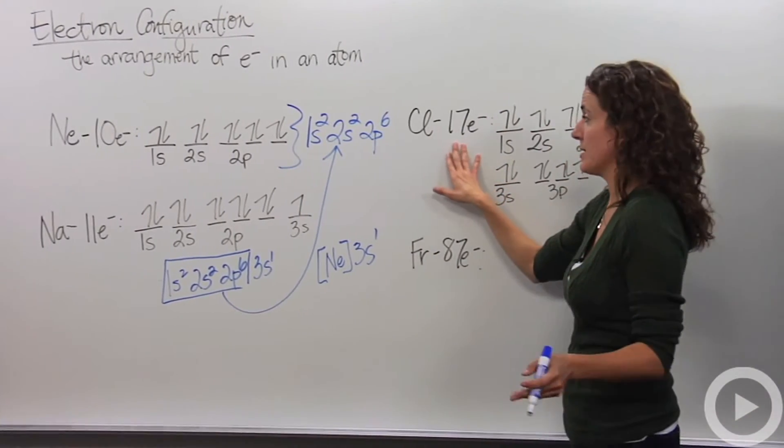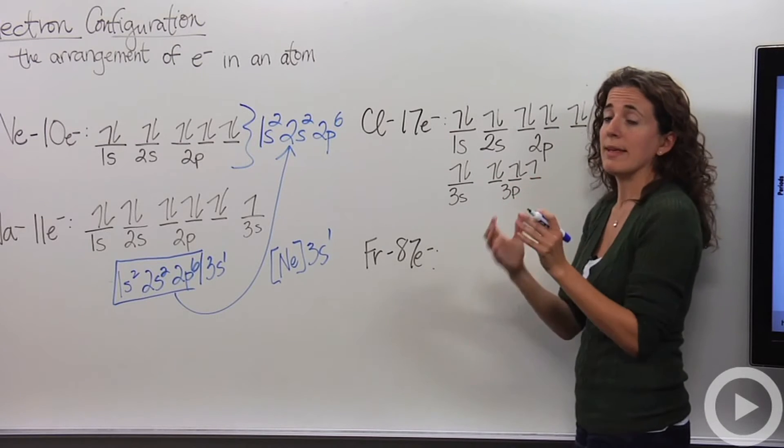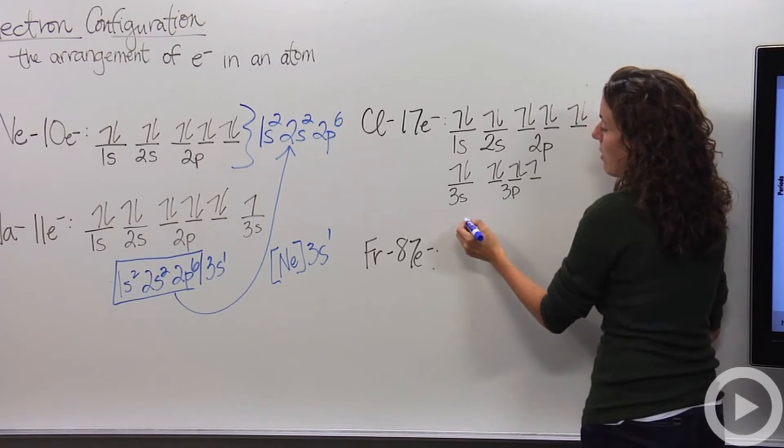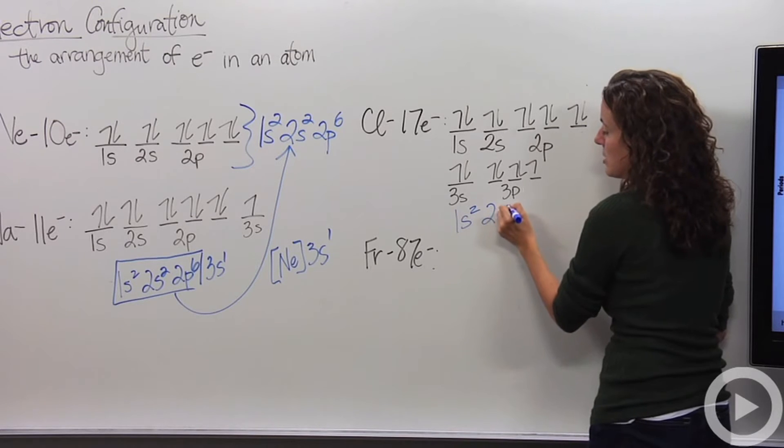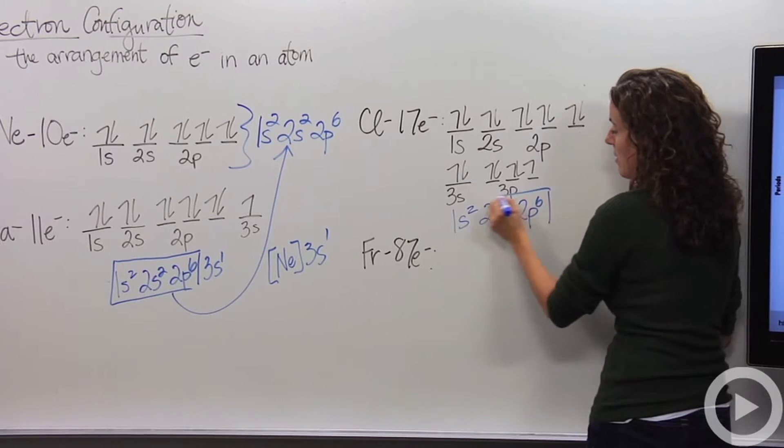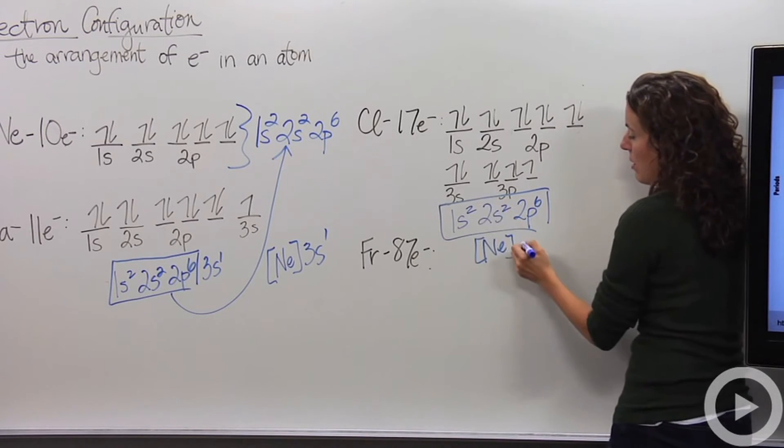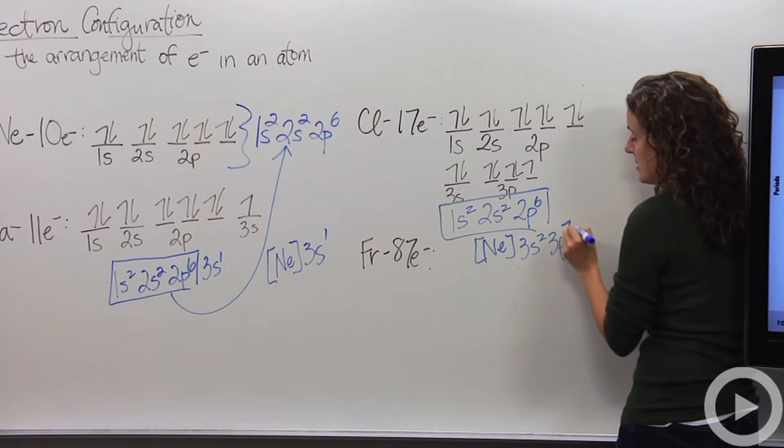Okay, let's do chlorine, which has a little bit more electrons. Chlorine, if we were to draw this, if we were to simplify this into electron configuration, we'd say chlorine has a 1s2, 2s2, 2p6. Again, same as neon. So instead I'm going to just write neon. 3s2, 3p7.